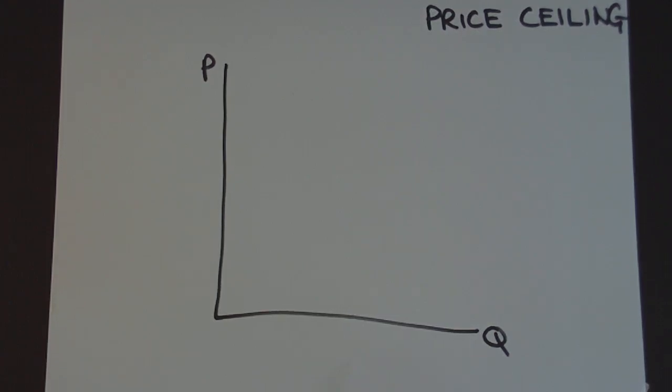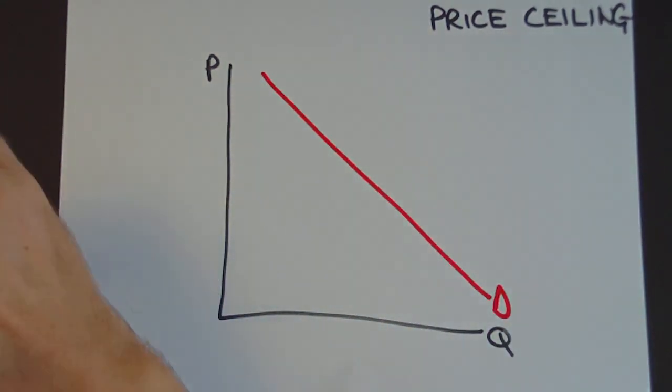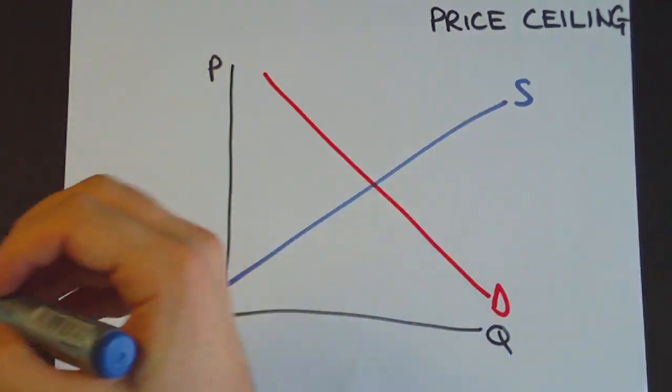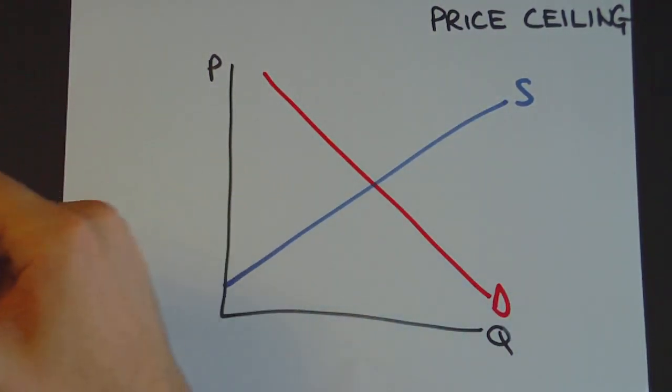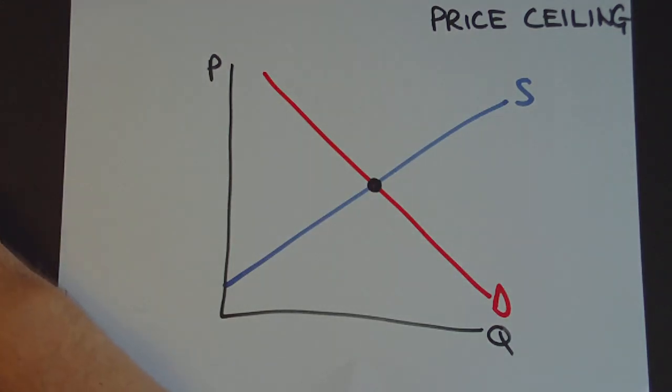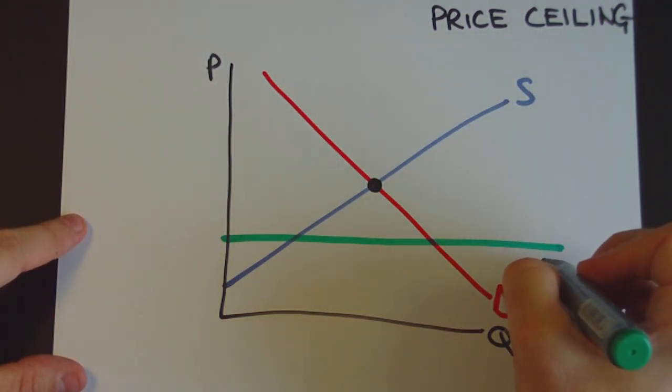Let's now talk about what happens with a price ceiling. We've got a downward sloping demand curve, an upward sloping supply curve, and the market equilibrium point here. But let's now assume that the government introduces a price ceiling at this level here.